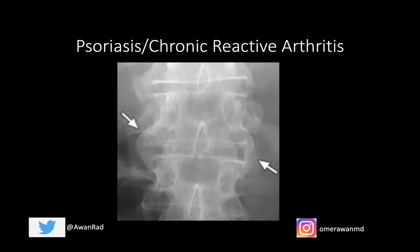Clinically these two are very different. In psoriasis, you typically have nail pitting and skin plaques, though fewer than a third of patients with psoriasis have musculoskeletal manifestations — if they do, they'd have paravertebral ossification. Chronic reactive arthritis looks radiographically identical to psoriasis but presents with conjunctivitis, urethritis, and arthritis — the classic mnemonic: can't see, can't pee, can't climb a tree. It's typically triggered by infection with Shigella, Salmonella, or Chlamydia. Radiographically it looks exactly like psoriasis.